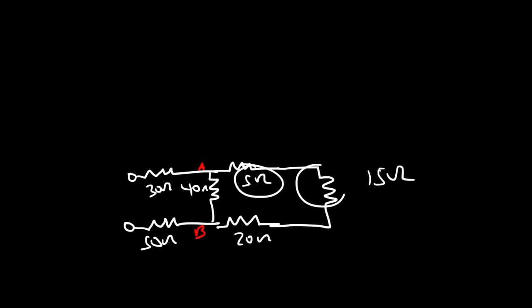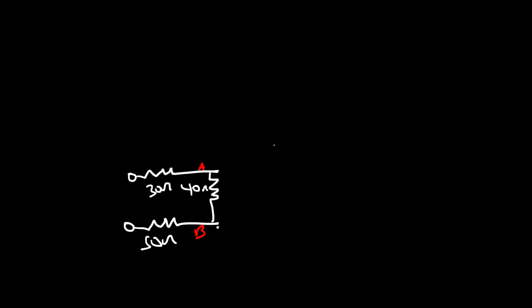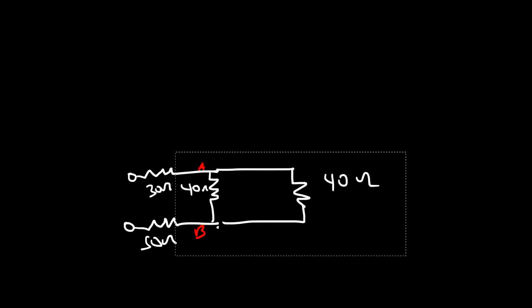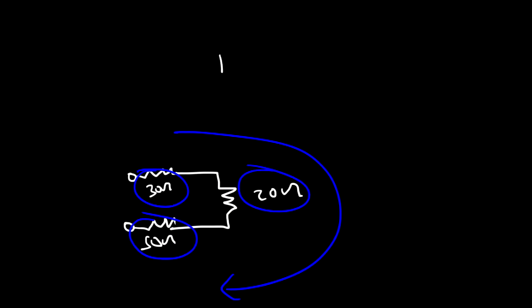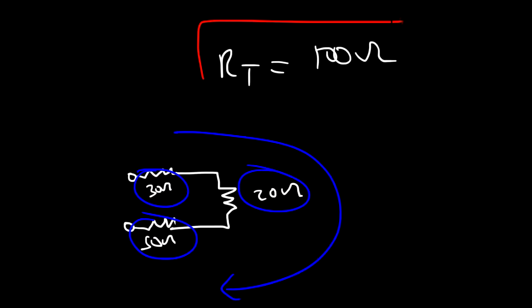These three resistors are in series: 5 plus 15 plus 20 is 40 ohms. Next, we have two 40 ohm resistors in parallel, so the equivalent resistance is half of 40, which is 20. And these three remaining resistors are in series with only one path for current to flow: 30 plus 20 plus 50 equals 100. Therefore, the equivalent resistance for this circuit is 100 ohms.